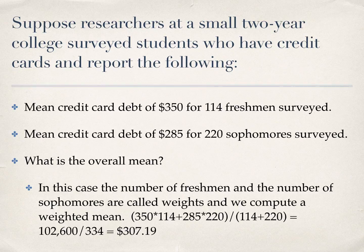The quotient is $307.19, so the weighted mean is $307.19. My guess was $300 — it was a little higher than that. But as I predicted, the weighted mean is closer to $285 than it is to $350.